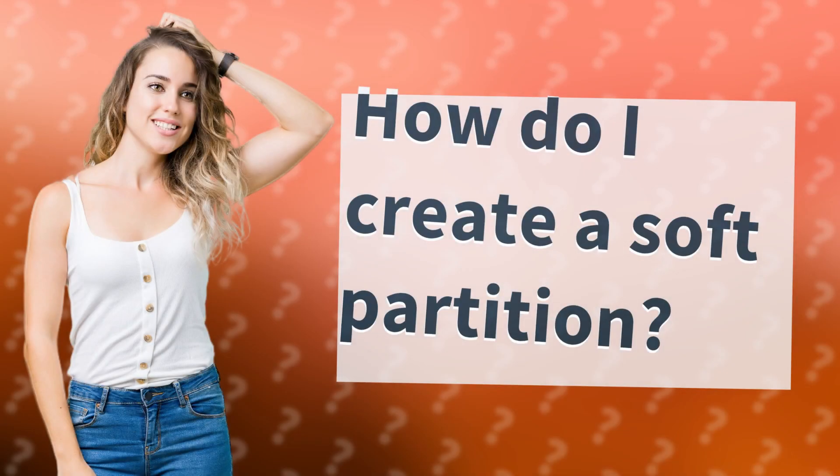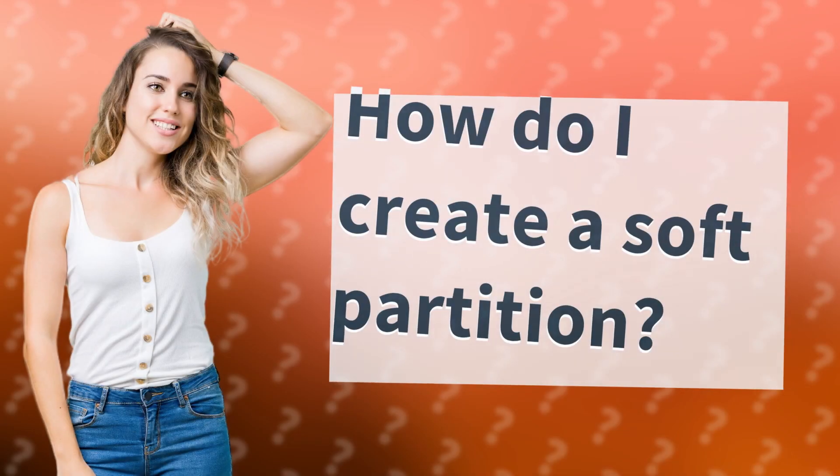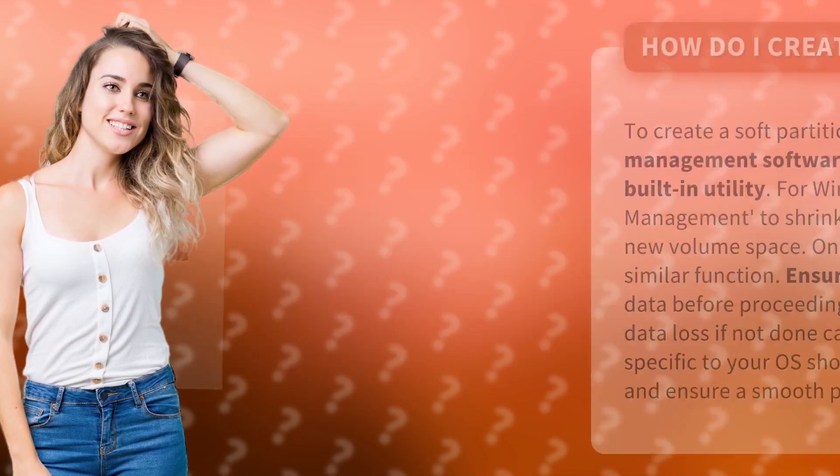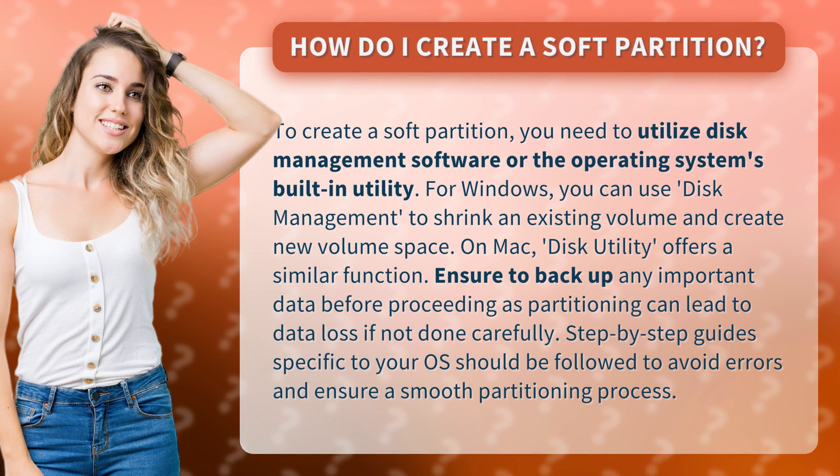How do I create a soft partition? To create a soft partition, you need to utilize disk management software or the operating system's built-in utility. For Windows, you can use disk management to shrink an existing volume and create new volume space.